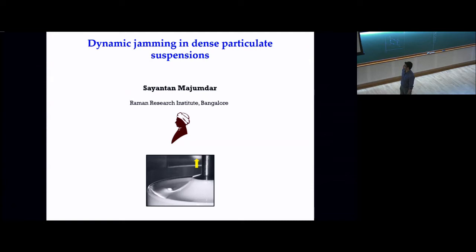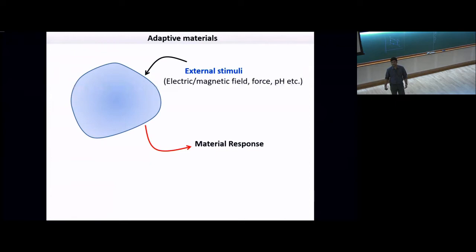In general, I am interested in studying adaptive materials. Adaptive materials are materials whose mechanical properties are not fixed, but depend on external fuel. Depending on external conditions, the mechanical properties can be changed. These changes can be very rapid, reversible and controllable. Such materials have the ability to keep pace with the changing environment.